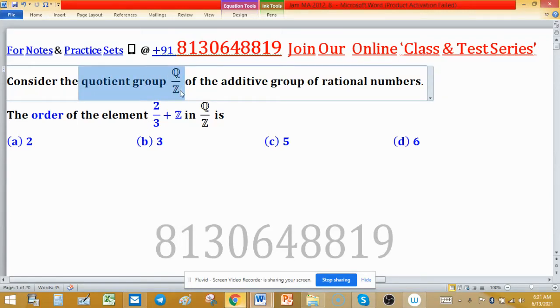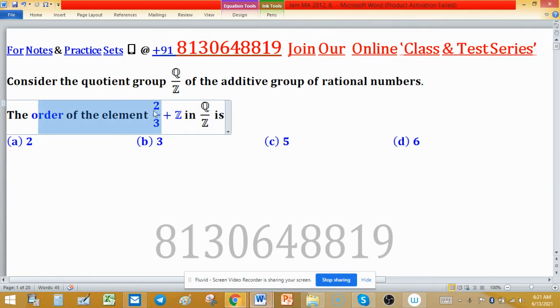Consider the quotient group Q/Z of the additive group of rational numbers. The order of the element 2/3 + Z in Q/Z is to be found.